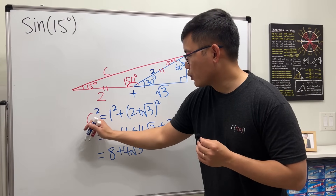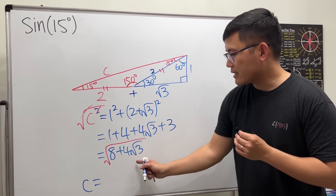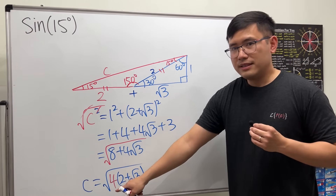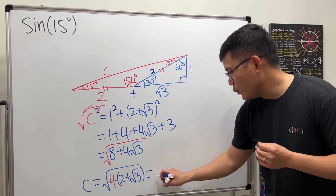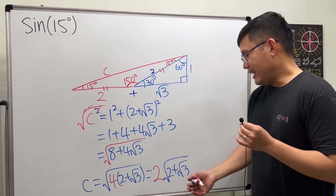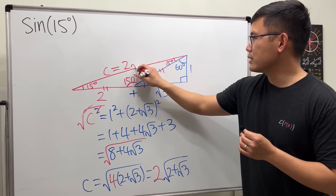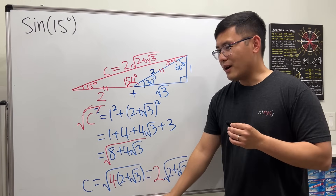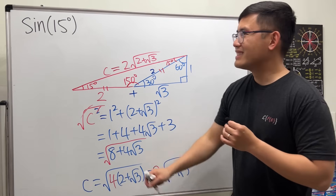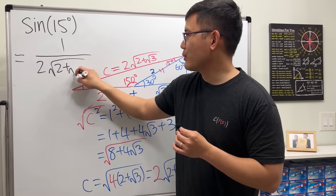Taking the positive square root: c = √(8 + 4√3). We can factor out 4: c = √(4 · (2 + √3)) = 2√(2 + √3). Now using sine = opposite/hypotenuse for the 15° angle, we get sine of 15° = 1 / (2√(2 + √3)). That's another nested square root situation, but that's our third answer.